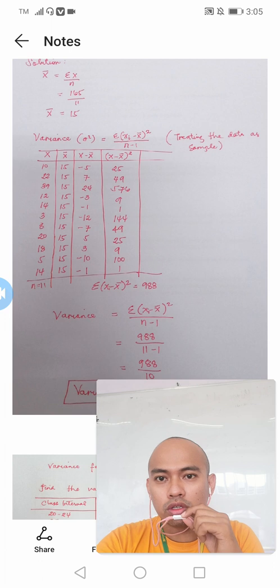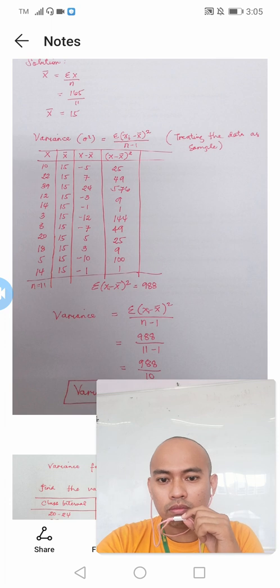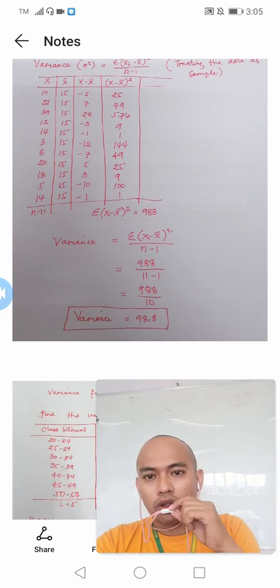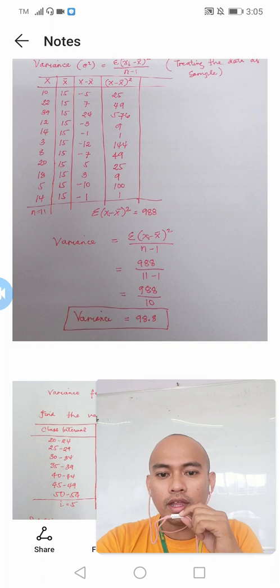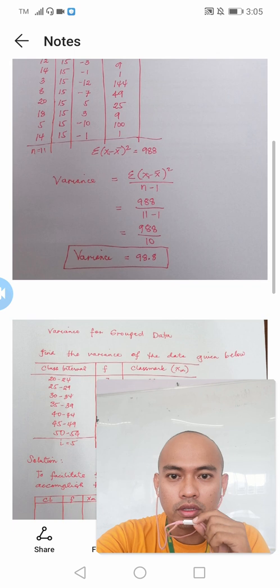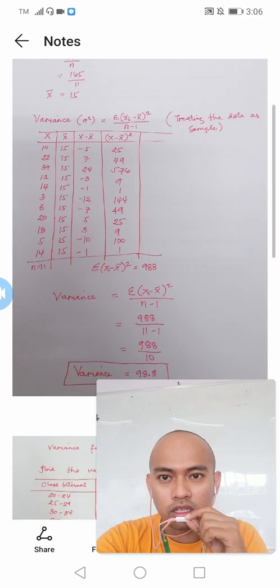After subtracting the observations and the mean, we need to come up with the fourth column, and that is the square of the difference of the observations and the mean. So we get the square of all these results in the third column. So we will come up with the following: 25, 49, 576, 9, 1, 144, 49, 25, 9, 100, and 1. Then after finding the square, we need to find now the sum of these results. So we have a sum of 988. And this will now be the value of our numerator in the formula of variance treating it as a sample. We are now ready to compute for the variance and that will now be equal to 988 all over 11 minus 1. Simplifying further, we have 988 divided by 10 and that will give you 98.8. And this 98.8 will now be the value of our variance in this given data set.